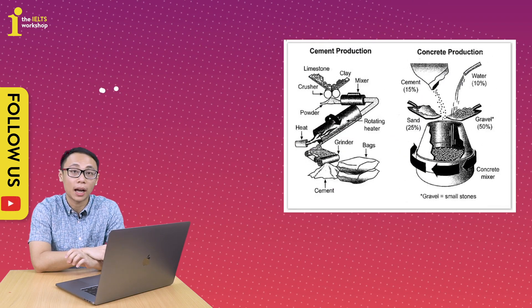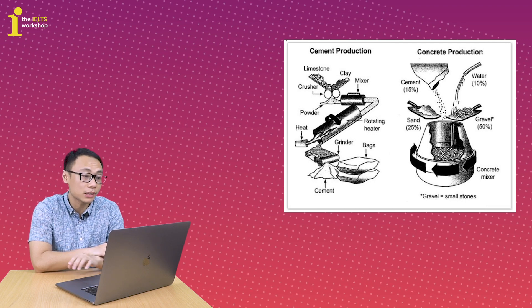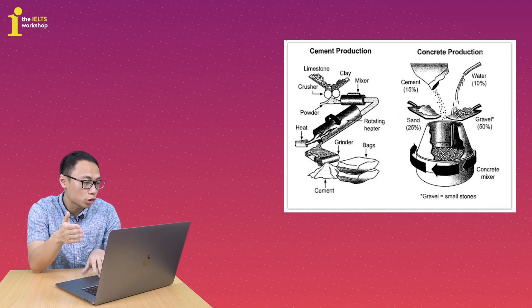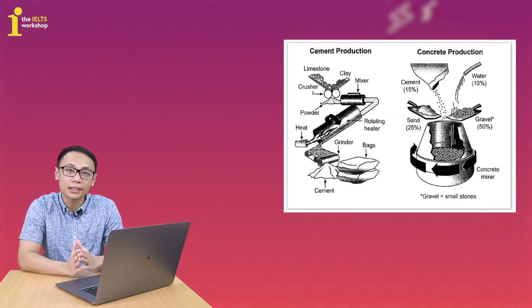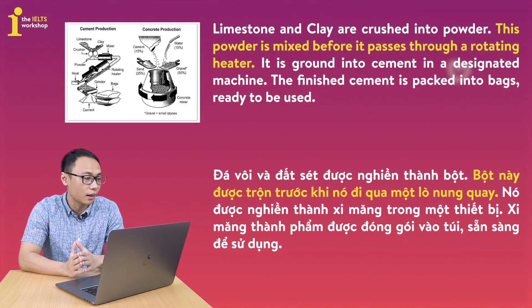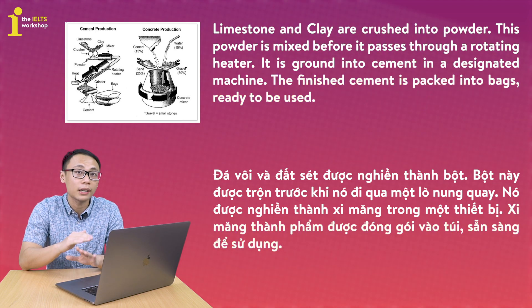Để hiểu rõ hơn về sequences thì chúng ta hãy nhìn vào bài Writing Task 1. Chúng ta có một biểu đồ dạng bài Process về quá trình làm concrete cũng như là cement - làm bê tông và xi măng. Hiện tại chúng ta có 4 câu rất đơn giản: Lime stone and clay are crushed into powder. This powder is mixed before it passes through a rotating heater. It is ground into cement in a designated machine. The finished cement is packed into bags ready to be used. Very simple.